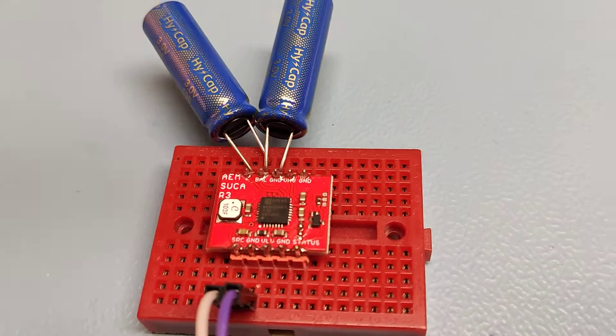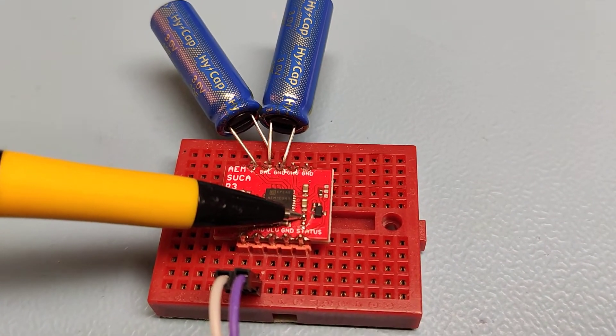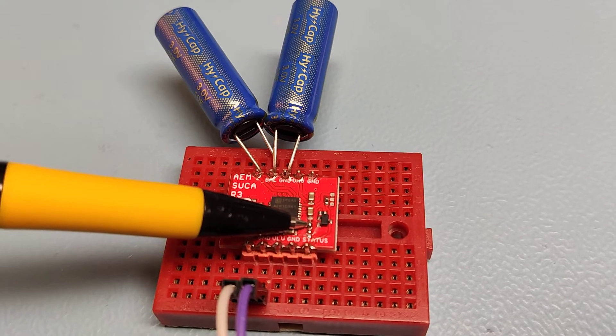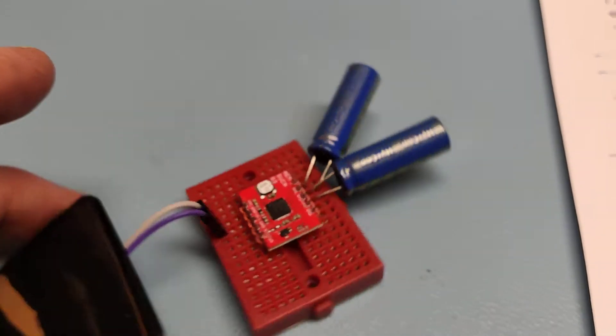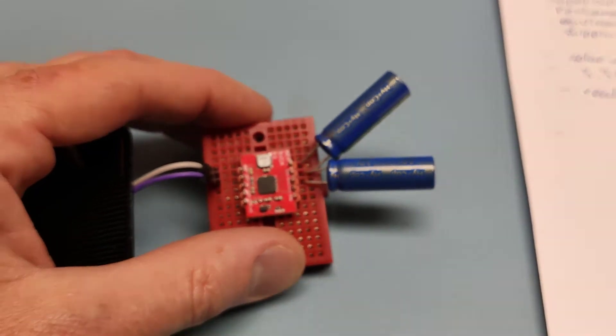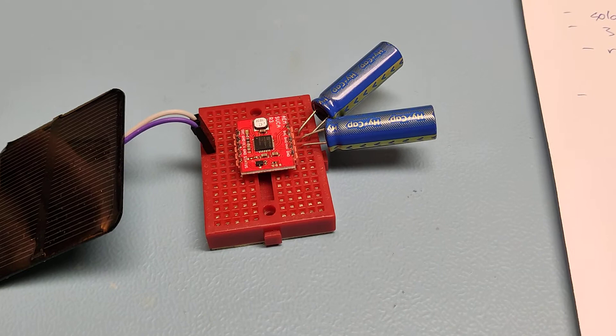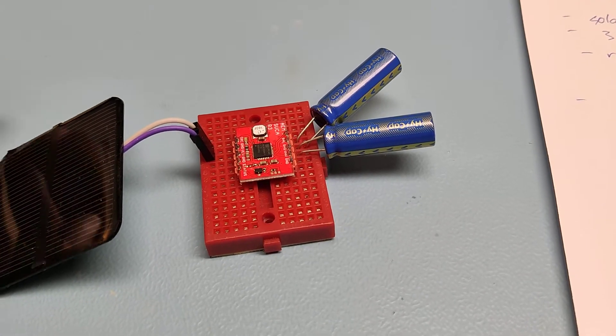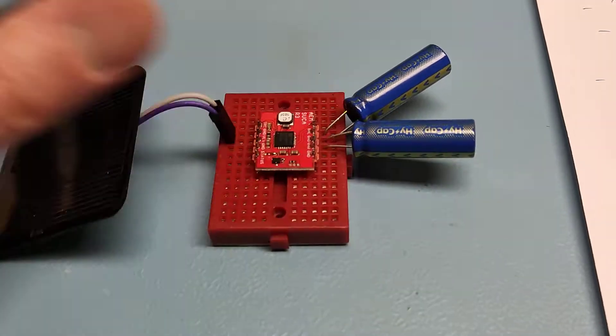Using a tiny solder jumper you can adjust the 3.3V to 2.5V. Basically you use a larger voltage range of the supercapacitors, and thereby you can get a larger battery lifetime from these supercapacitors.